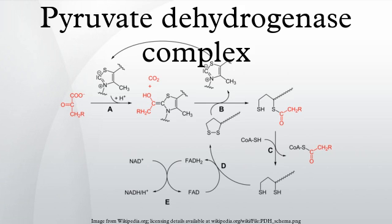Pyovate dehydrogenase complex is a complex of three enzymes that convert pyovate into acetyl-CoA by a process called pyovate decarboxylation. Acetyl-CoA may then be used in the citric acid cycle to carry out cellular respiration, and this complex links the glycolysis metabolic pathway to the citric acid cycle.